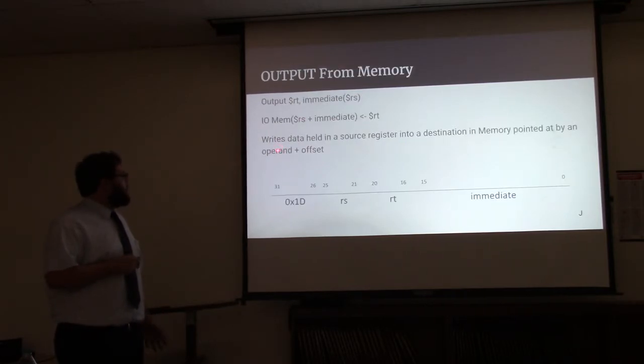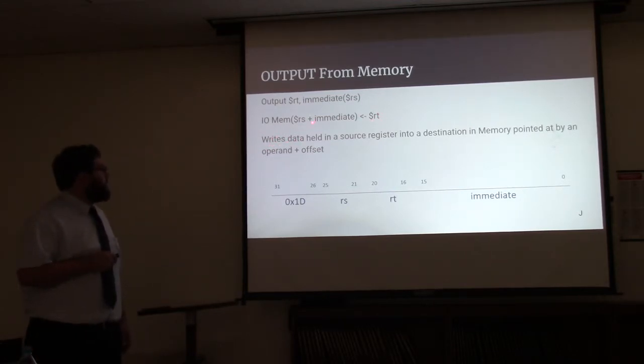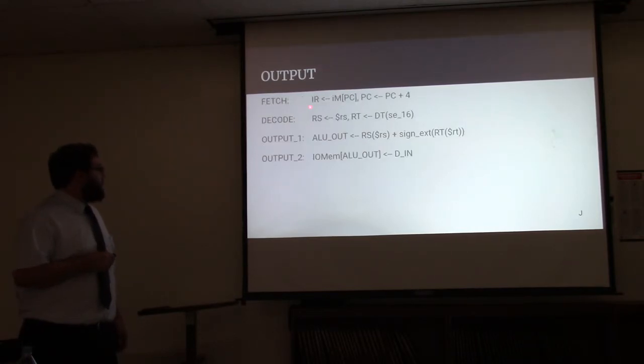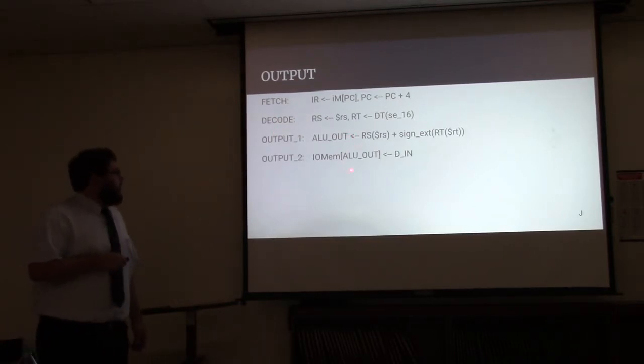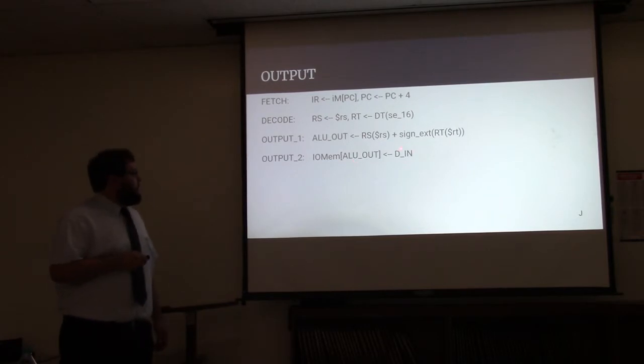Output for memory works relatively the same way, but with some slight differences, but it writes data held from a source register into a destination pointed at by an operand and an offset. It also has fetch and decode and then same with the effective address calculation. I/O memory is then given what is held on the DIN register.